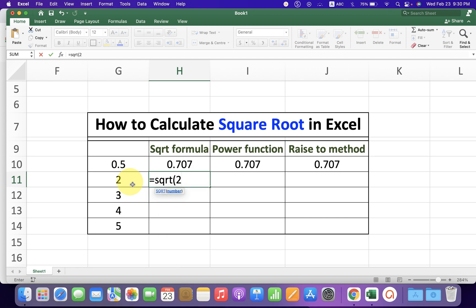After selecting the number, close the bracket and press Enter on your keyboard to calculate the square root. Now, if you have multiple numbers like this, what you can do is...